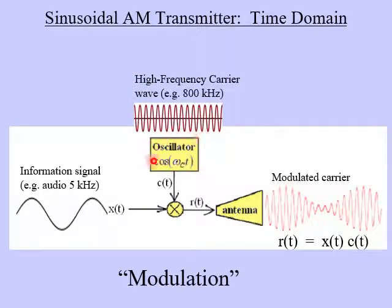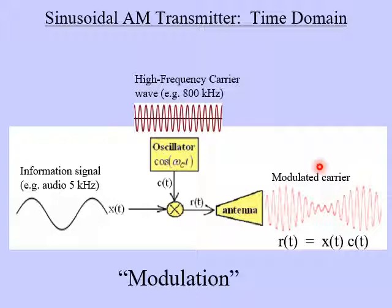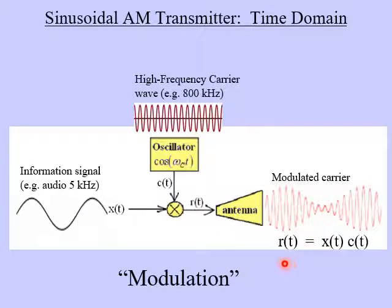This is done through a circuit called an oscillator that produces, for example, a cosine function at the carrier frequency. The carrier frequency is considerably higher — for example, it might be 800 kilohertz. This would correspond to a radio station on the AM dial at AM 800. So when these two signals are multiplied together, we get the modulated carrier. When X of T and C of T, the carrier, are multiplied together, we see that when the signal goes high, we get a large amplitude in the output, and when the signal goes low, we get a small amplitude. So we have amplitude modulation, and our output, which is sent to the antenna and broadcast, we're going to call R of T — that's the product of X of T and C of T.